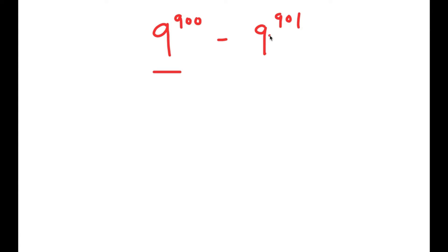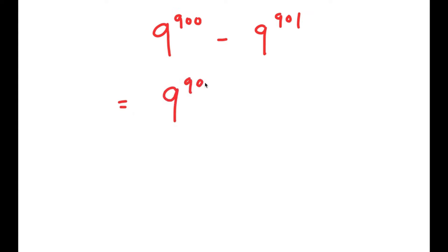The easiest way to solve this is to simplify as much as we can, and a way to do that is to factor out a term. 9 to the power of 900 is actually a factor of 9 to the power of 901, so all we have to do is rewrite 9 to the power of 901 as something times 9 to the power of 900. We can use properties of exponents to do this, so I'm going to rewrite 9 to the power of 901 as 9 to the power of 900 plus 1.